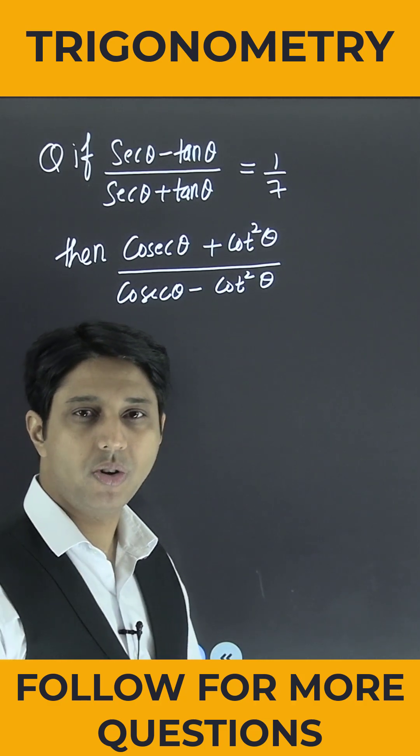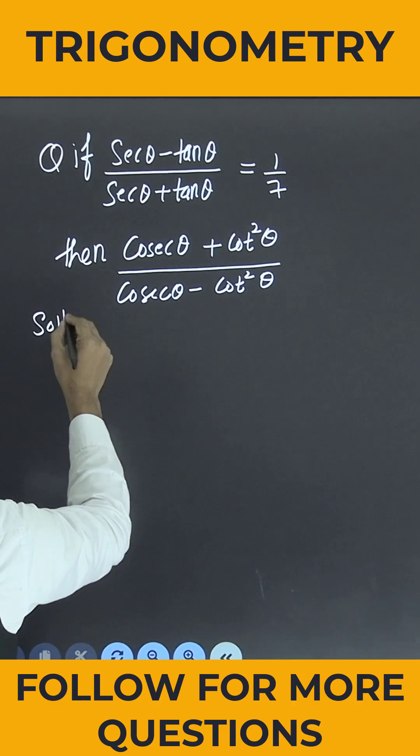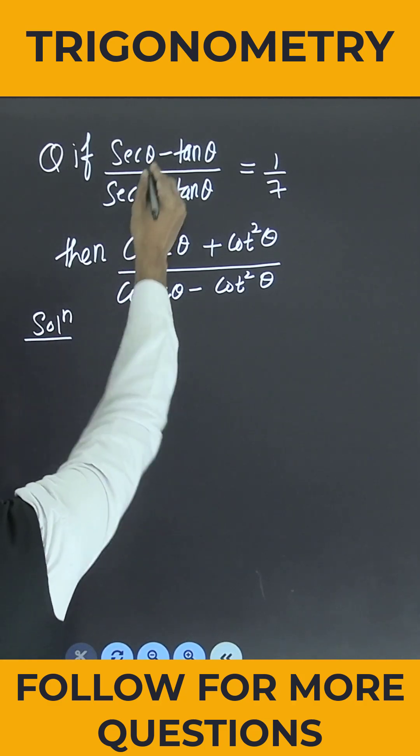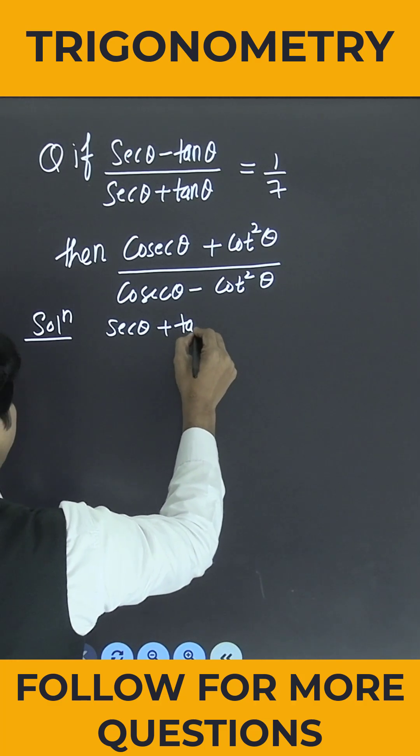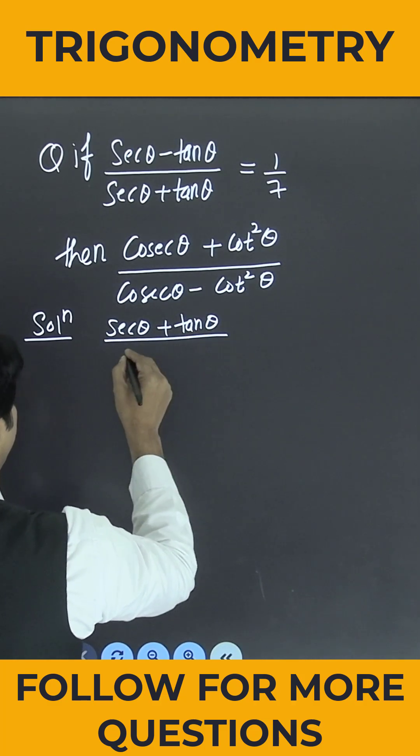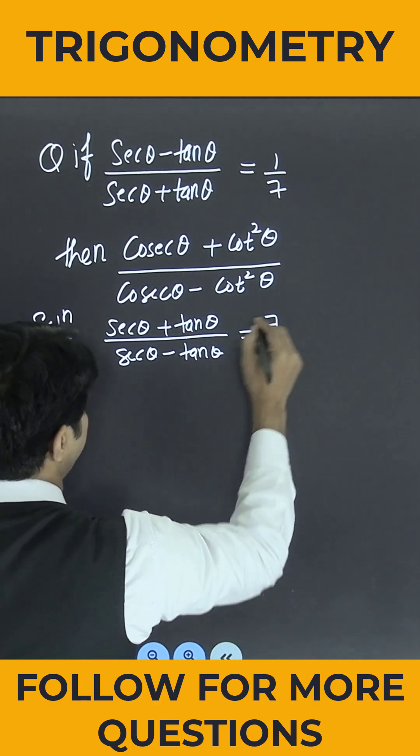Now we have to use componendo and dividendo in this question. So if I use componendo and dividendo, this can be written as sec θ plus tan θ divided by sec θ minus tan θ is equal to 7.